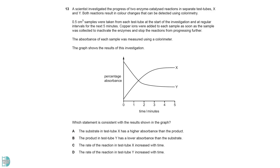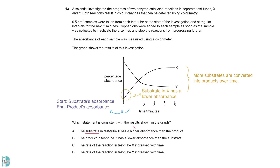As time goes by, more substrates are converted into products. The graph begins with the absorbance of the substrate and ends with the product. A is wrong because the substrate in X has a lower absorbance. B is the answer. C and D are both incorrect because the rate of reaction is high for both at the beginning and slows down towards the end. We know this by checking the graph's gradient.